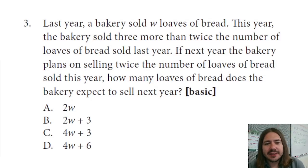Number three says, last year a bakery sold W loaves of bread. This year the bakery sold three more than twice the number of loaves of bread sold last year. If next year the bakery plans on selling twice the number of loaves of bread sold this year, how many loaves of bread does the bakery expect to sell next year?